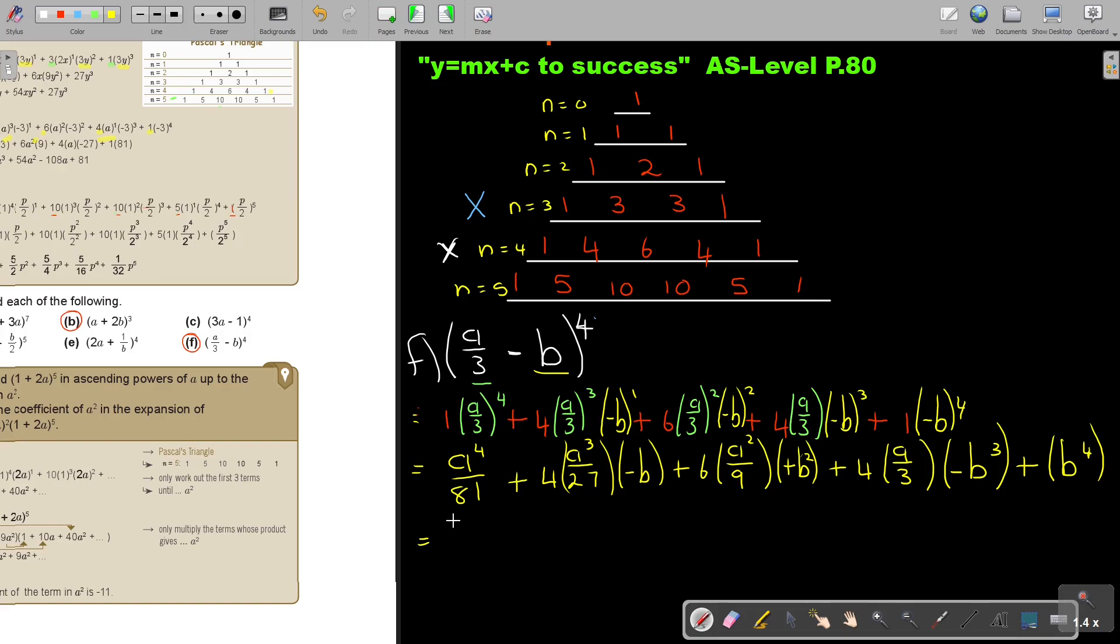So this one, if I want to write it, I can write it like this. Because the positive times the negative is negative 4 over 27 A cubed B. This is positive, but it's 6 over 9. So it can be 6 divided by 2 over 3. And then it's A squared B squared. And this becomes a negative. So it's 4 over 3 A B cubed plus B to the power of 4.